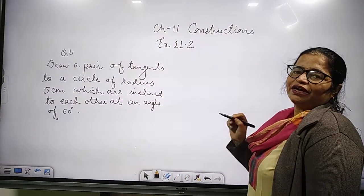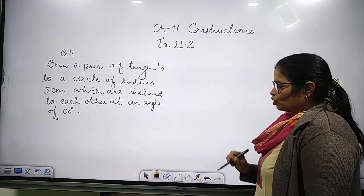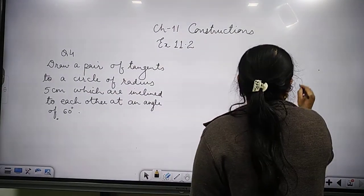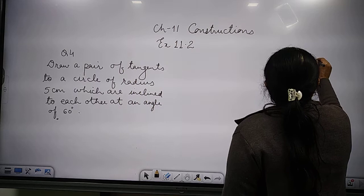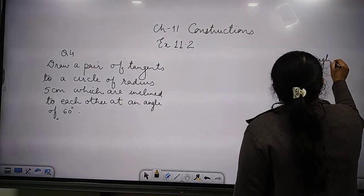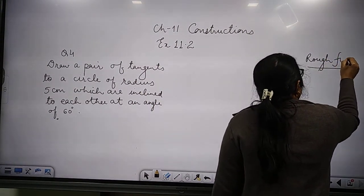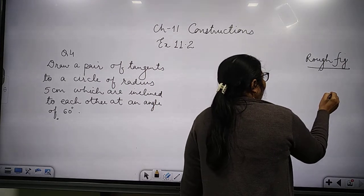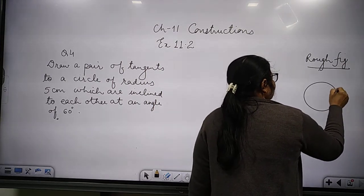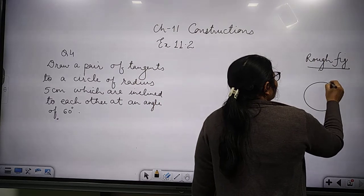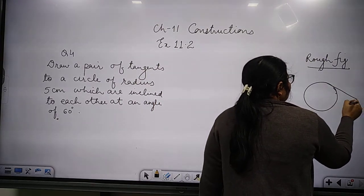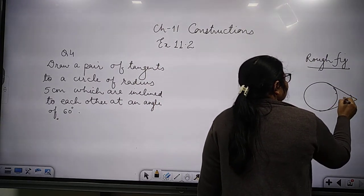To understand this question, let's draw a rough figure. If we have the circle like this, we are asked to make the tangents at an angle of 60 degrees.